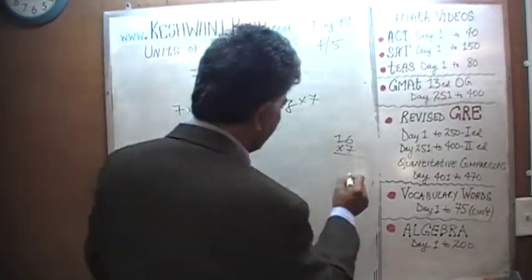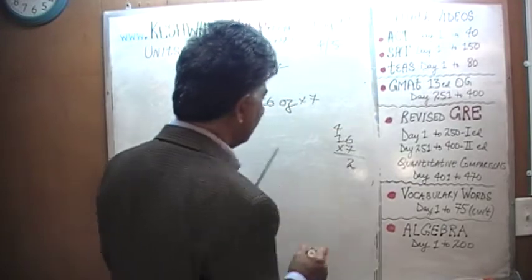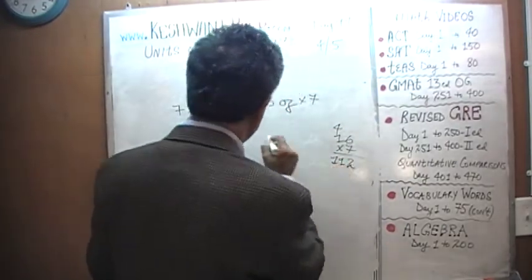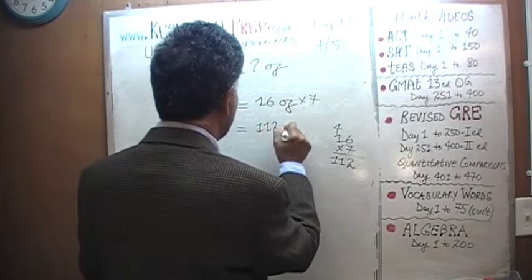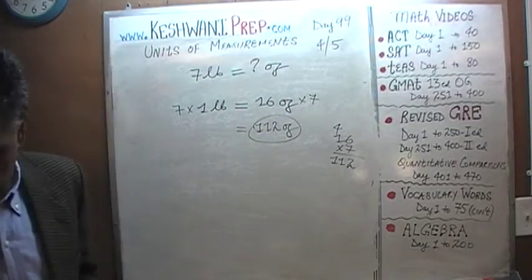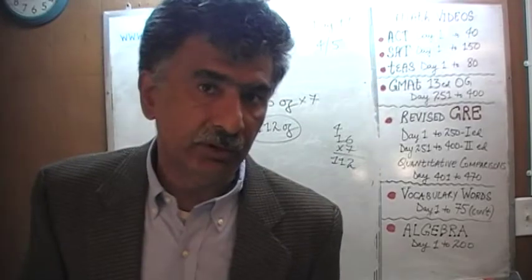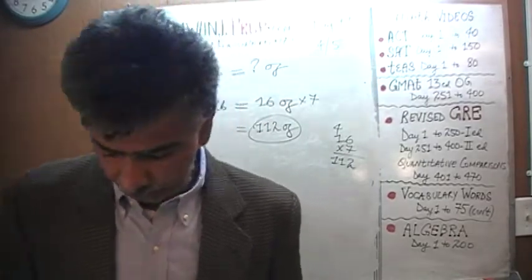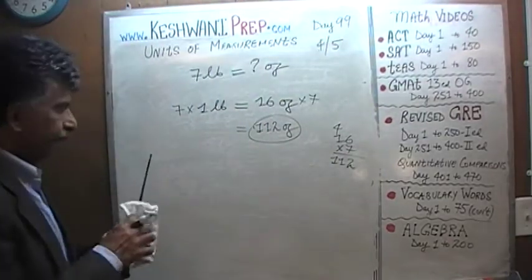Seven times six is forty-two — write down two, carry four. Seven times one is seven, plus four is eleven. It's one hundred and twelve ounces. One hundred and twelve ounces make seven pounds.